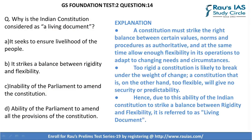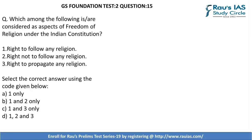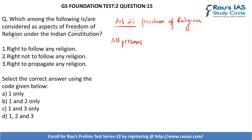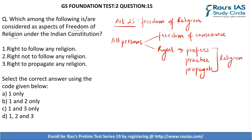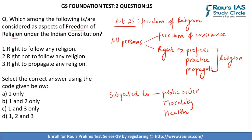Question 15 is in the context of freedom of religion under the Indian Constitution. Article 25 guarantees freedom of religion — all persons are equally entitled to freedom of conscience and the right to freely profess, practice, and propagate religion, subject to public order, morality, and health. The first statement — right to follow any religion — is correct. The second — right not to follow any religion — is also correct; Article 25 gives freedom of conscience, which includes the right of a person to follow or not follow any religion.